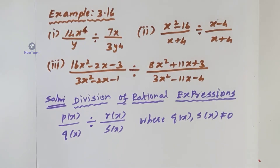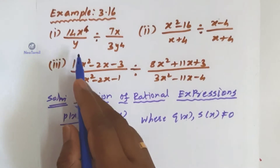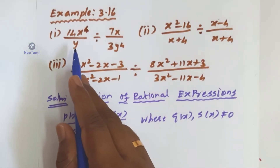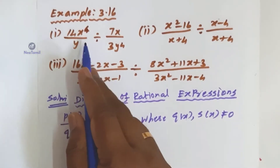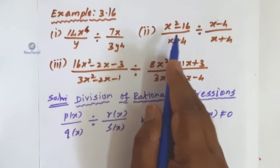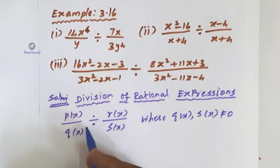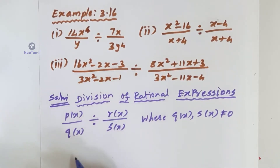The concept is Division of Rational Expressions. Example number 3.16, sub-division number 1: two expressions with division given. Sub-division number 2: also two rational expressions with division. The third: two rational expressions with the division concept.